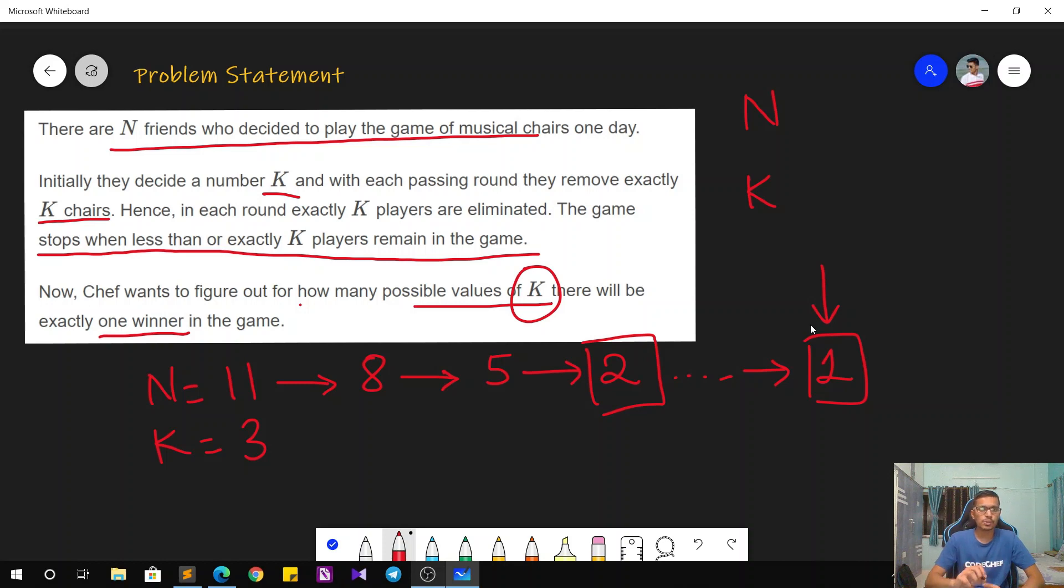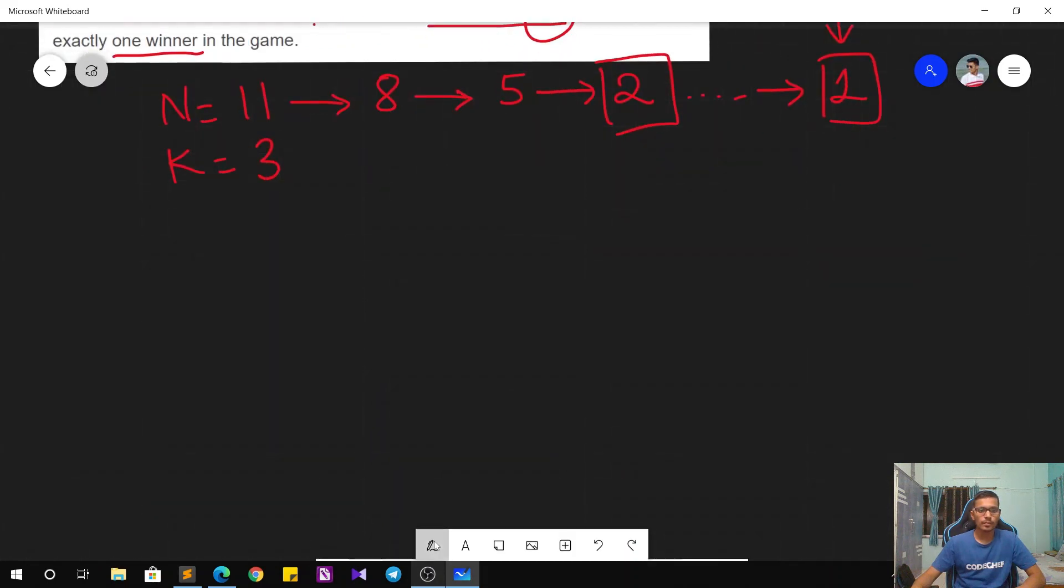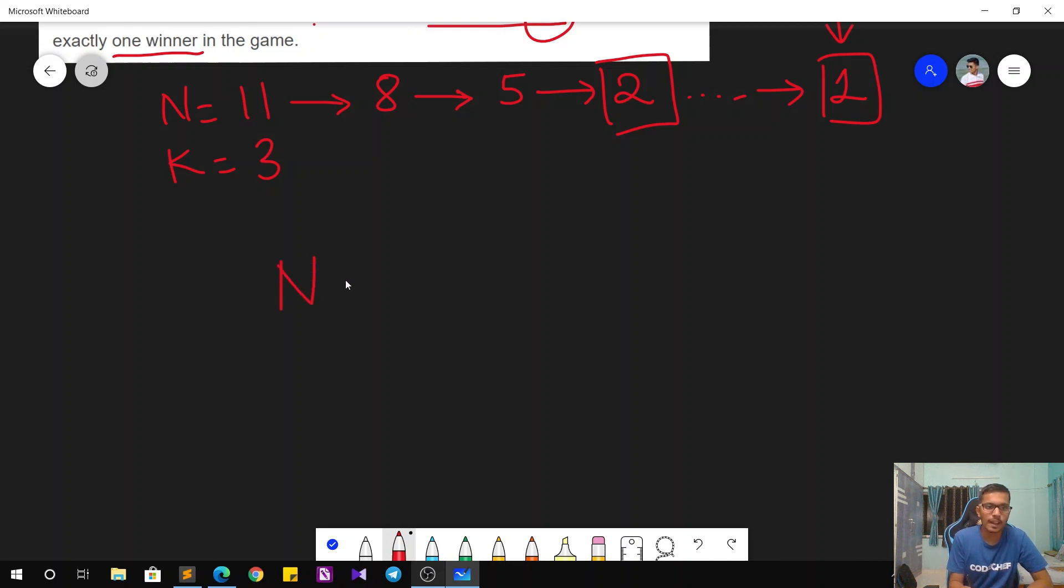Now let's approach the solution with the help of an example. Basically, what we can say is that we have a number N, and in the end we want one single chair to be present because that is going to be the player who wins. So if we have that one single chair present, then whatever is the other remaining value, that remaining value should be a multiple of K. Why? Because if you rearrange this, then we have something like N minus 1.